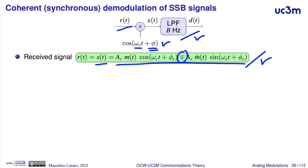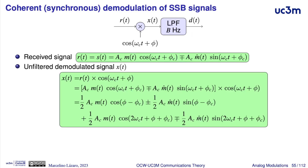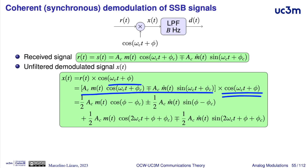The received signal is multiplied with the cosine. So we have the single sideband modulated signal times a cosine, and then we will use the usual trigonometric identities. We have cosine times cosine, which can be written as one-half cosine of the difference between arguments.